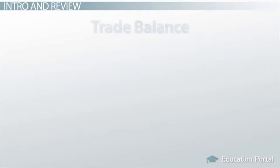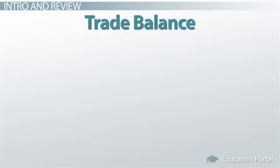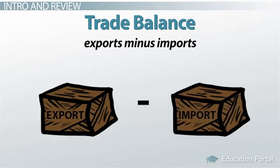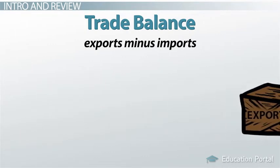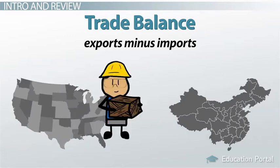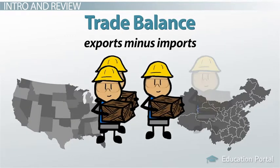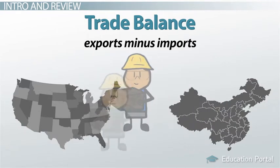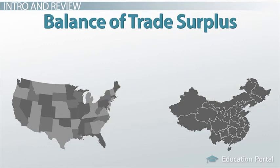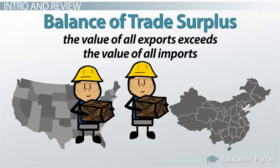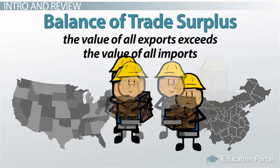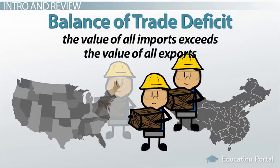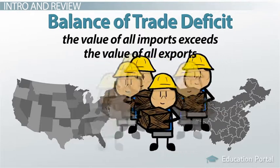Simply defined, a country's trade balance, also called balance of trade, is the calculation of its exports minus imports. The balance can also be understood as how many goods and services are being sold to foreign countries minus how many goods and services domestic citizens are buying from foreign countries. A balance of trade surplus happens when the value of all exports exceeds the value of all imports. A balance of trade deficit is when the value of all imports exceeds the value of all exports.